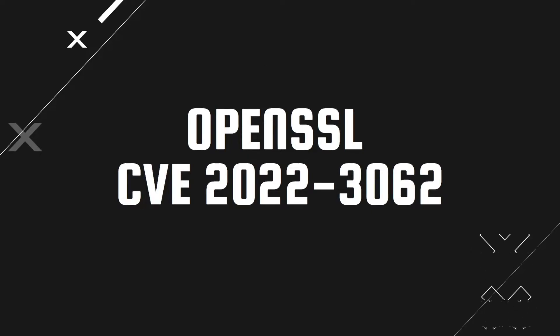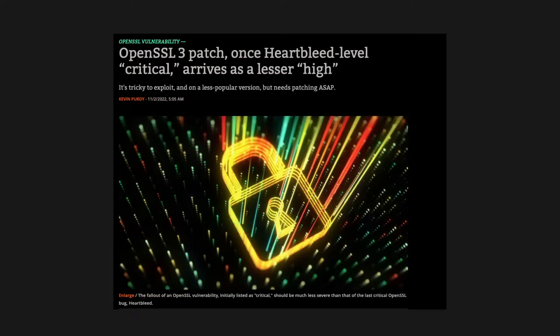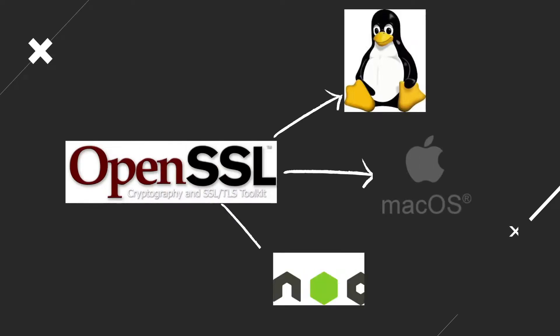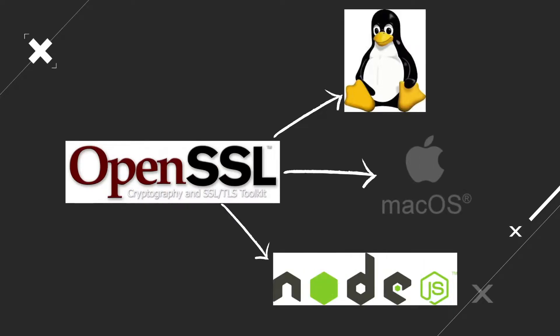We recently had a new release from OpenSSL version 3.0.7 containing a patch, which was initially thought to be the next Heartbleed but turned out to be another way to perform denial of service. OpenSSL is a general purpose cryptography library that offers an open source implementation of the TLS protocol. It is pretty much used on any Linux distro, macOS, and some Node.js applications.